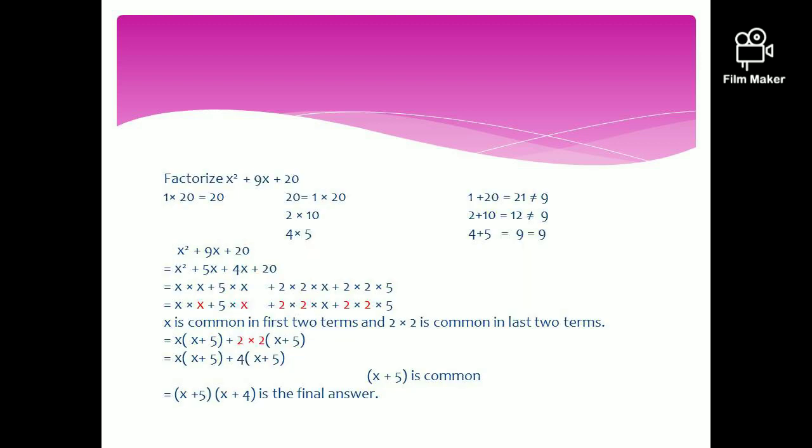Let's verify the theory with another example. The question is to factorize x squared plus 9x plus 20. Multiply the coefficient of x squared, which is 1, by the constant term 20: 1 times 20 equals 20. Write the factors of 20. First: 1 times 20 — 1 plus 20 equals 21, not 9. Next: 2 times 10 — 2 plus 10 equals 12, also not 9. Then: 4 times 5 — 4 plus 5 equals 9, which exactly matches the coefficient of x.